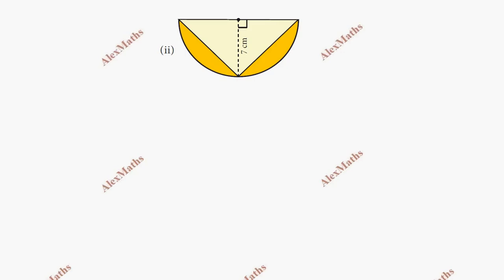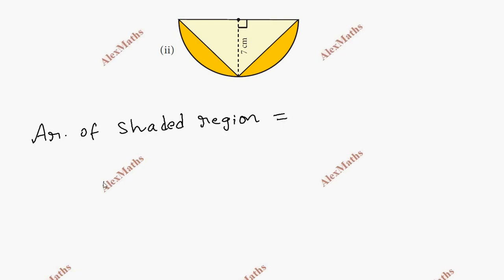Subdivision 2: we have a semi-circle. So in the shaded region, we have to subtract. Area of shaded region equals area of semi-circle minus area of triangle.